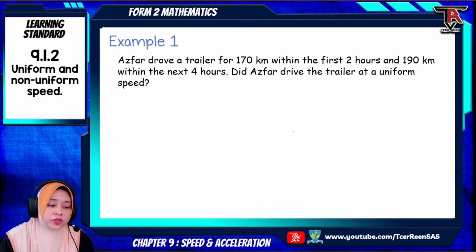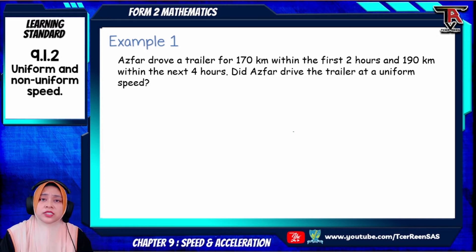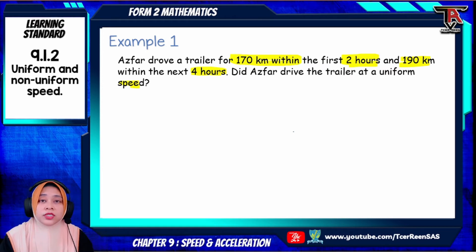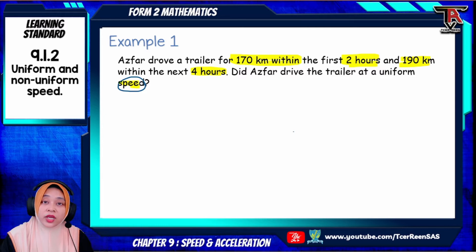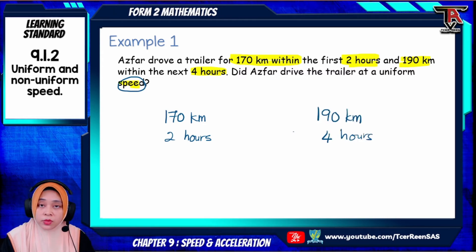Example 1: Azfar drove a trailer for 170 km within the first 2 hours and 190 km within the next 4 hours. Did Azfar drive the trailer at a uniform speed? For this type of question, first of all you must highlight the important information given — for example, 170 km, 2 hours, 190 km, and 4 hours. We just jot down what is given and what is asked. Here, we need to find the speed. The first info is 170 km for 2 hours, and the second is 190 km for 4 hours.